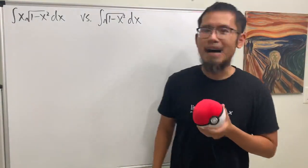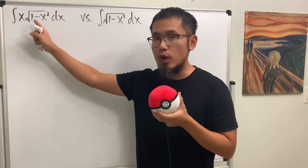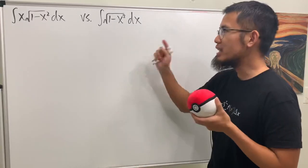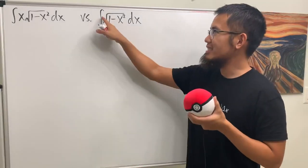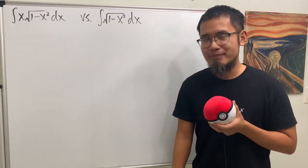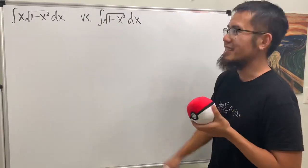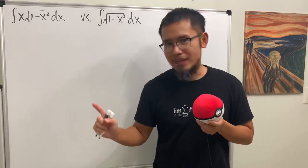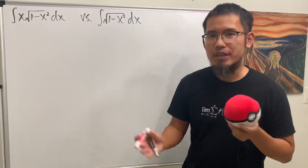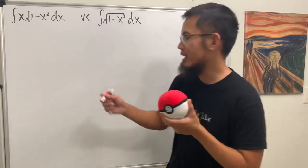We have two integrals. The first one is the integral of x times the square root of 1 minus x squared. The first one is easier because we can just do it by u-substitution.